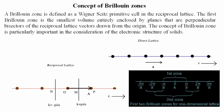Now we need to understand what a Brillouin zone is. The Brillouin zone is defined as the Wigner-Seitz primitive cell in the reciprocal lattice. In the direct lattice there is a Wigner-Seitz primitive cell — this is the smallest volume occupied by the atom. The first Brillouin zone is the smallest volume entirely enclosed by planes that are perpendicular bisectors of the reciprocal lattice vectors drawn from the origin. The concept of Brillouin zones is particularly important in the consideration of the electronic structure of solids.